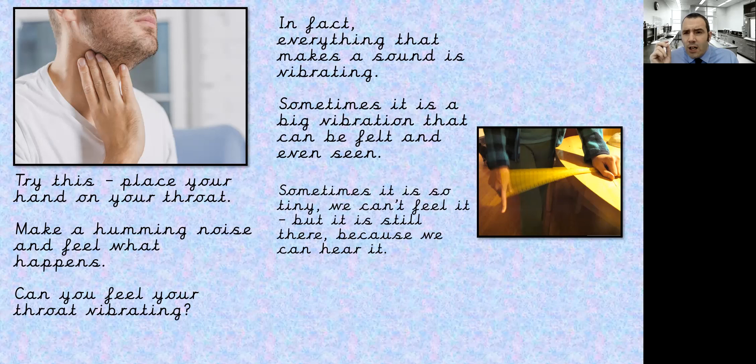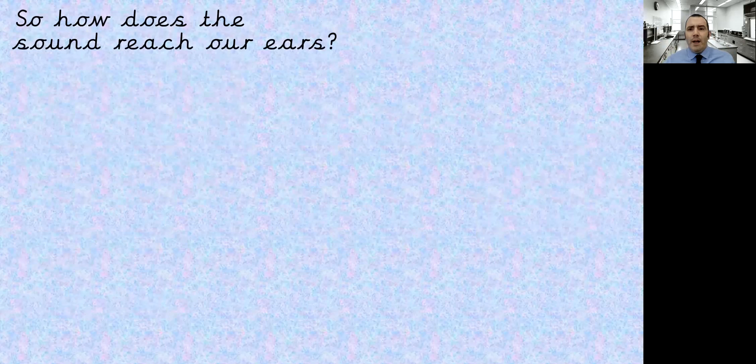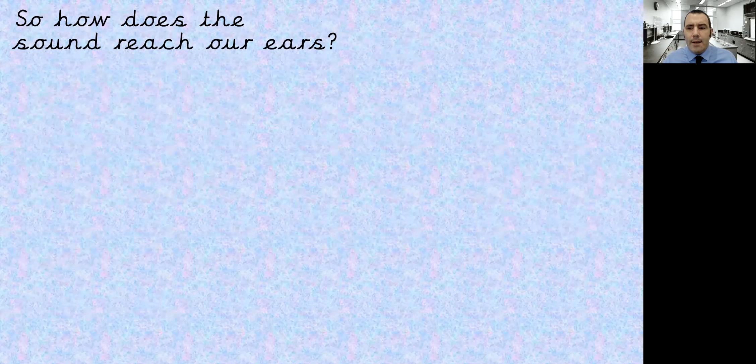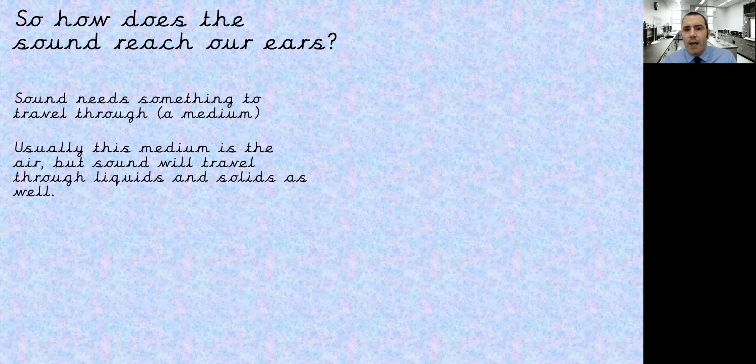So there might be something that's just a little annoying noise in the background. You think, what is that noise? Where is it coming from? It's not big enough for you to be able to identify where it comes from, but you know it's there. So what we need to understand today is how does the sound reach our ears? So sound needs something to travel through. We call it a medium. Usually this medium is the air, so the air around us. But sound will travel through liquids and solids as well.